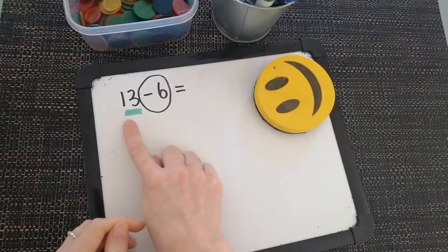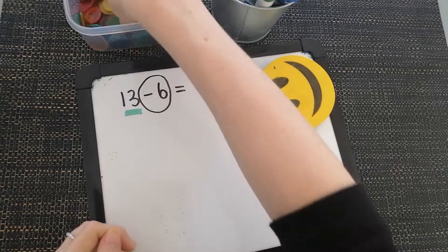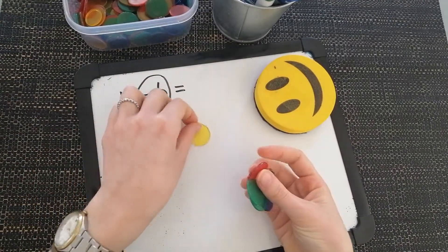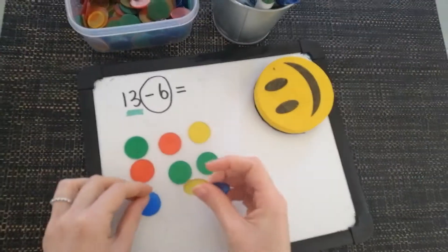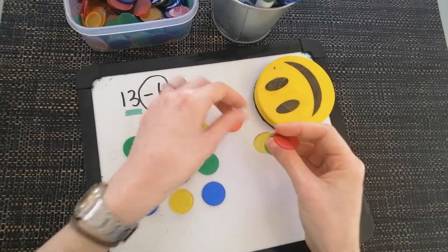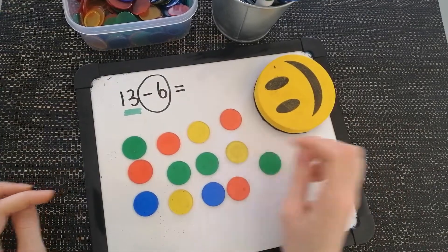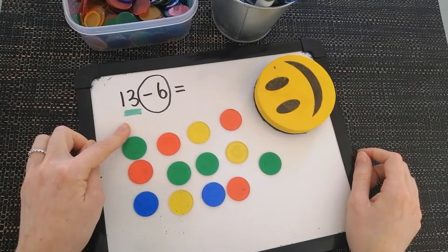Let's see, my question is 13 take away 6. I need to start with 13 counters. 1, 2, 3, 4, 5, 6, 7, 8, 9, 10, 11, 12, 13. So I have my 13 counters to begin with. That is the number at the start of my number sentence.